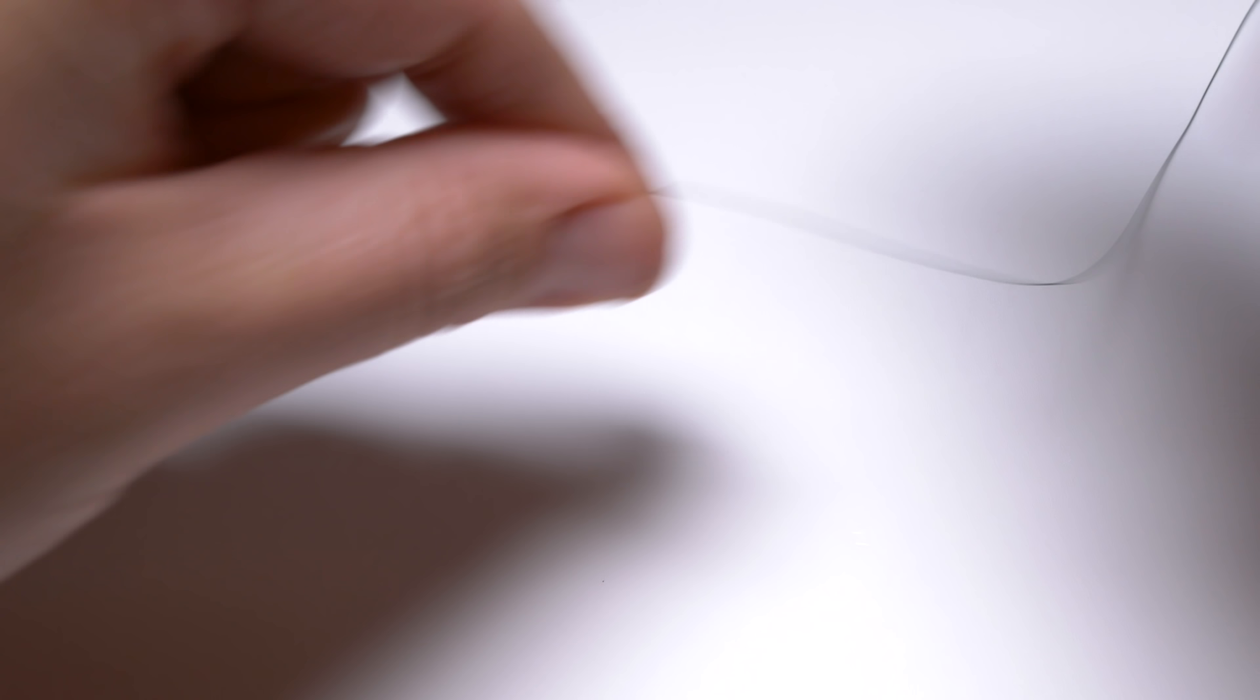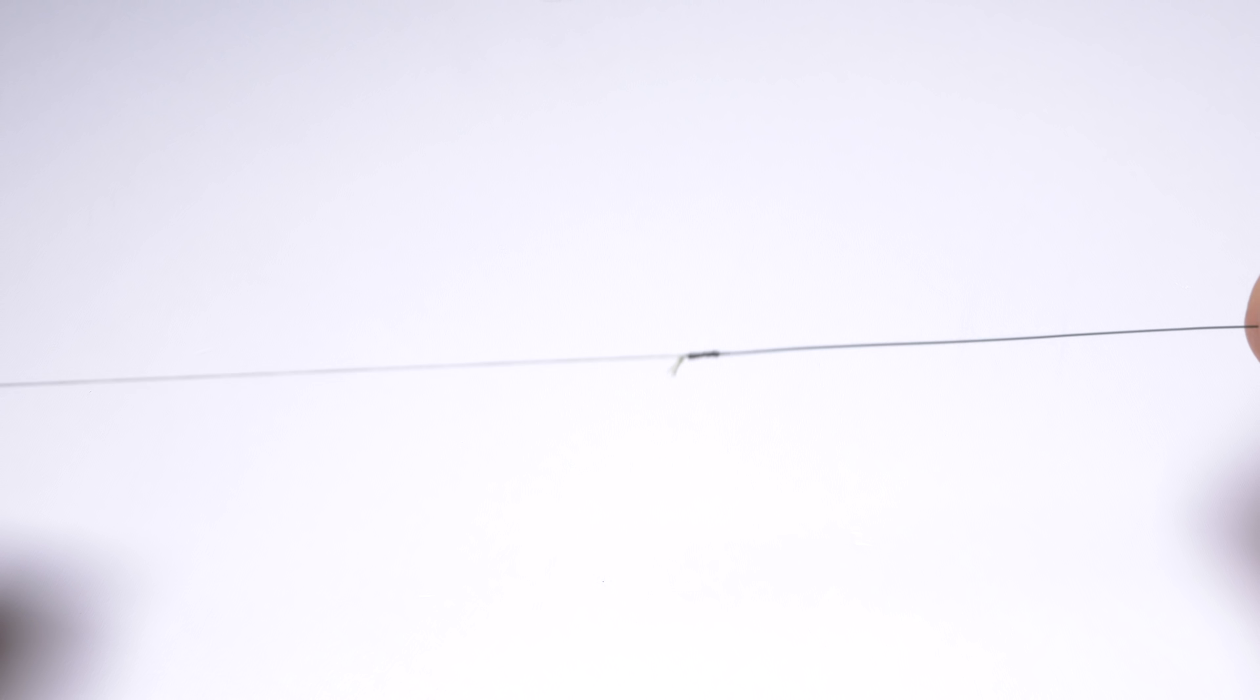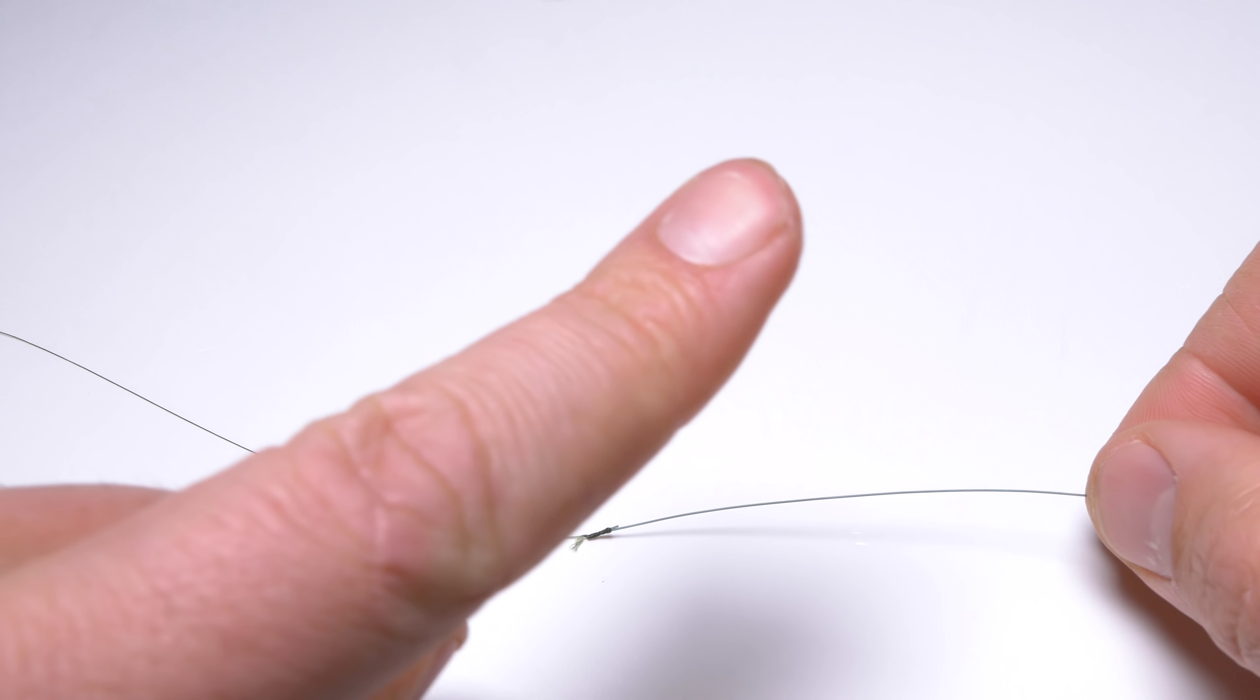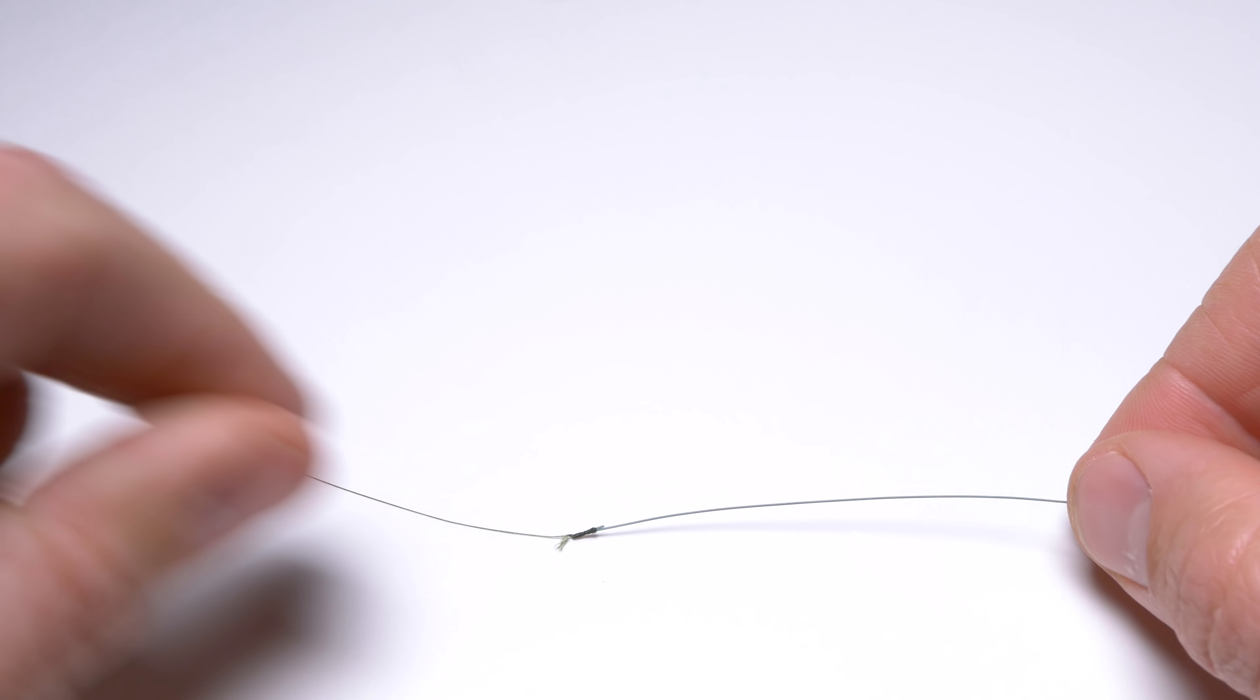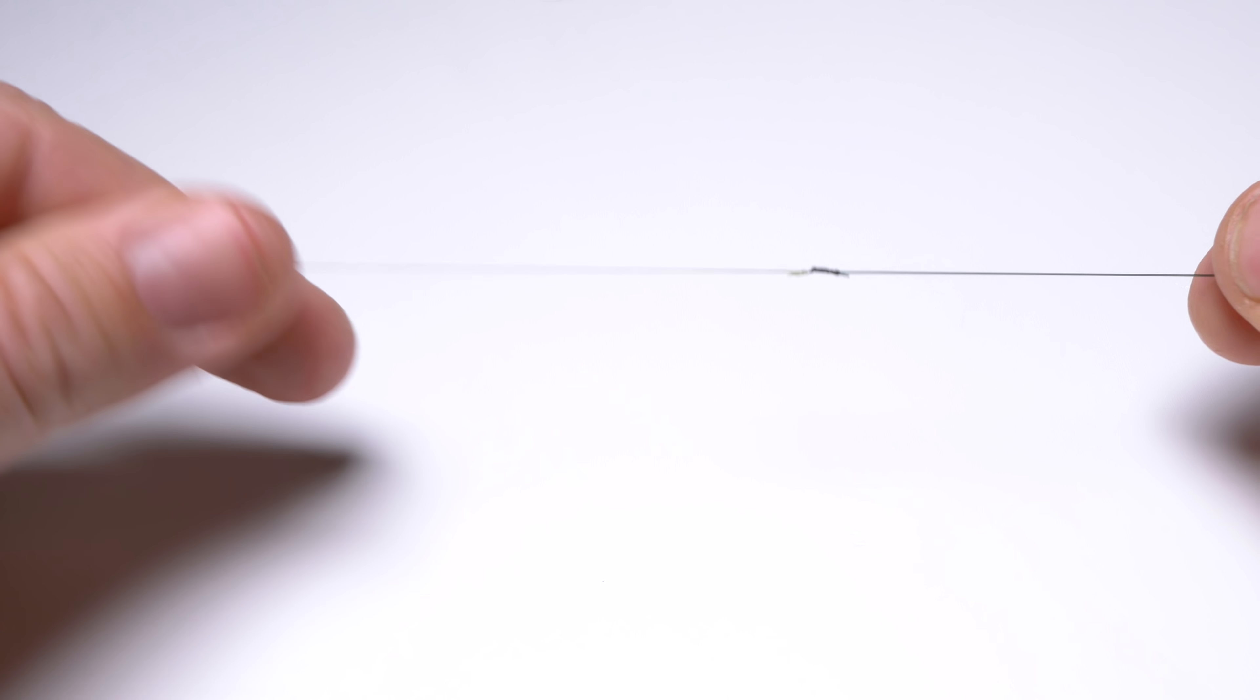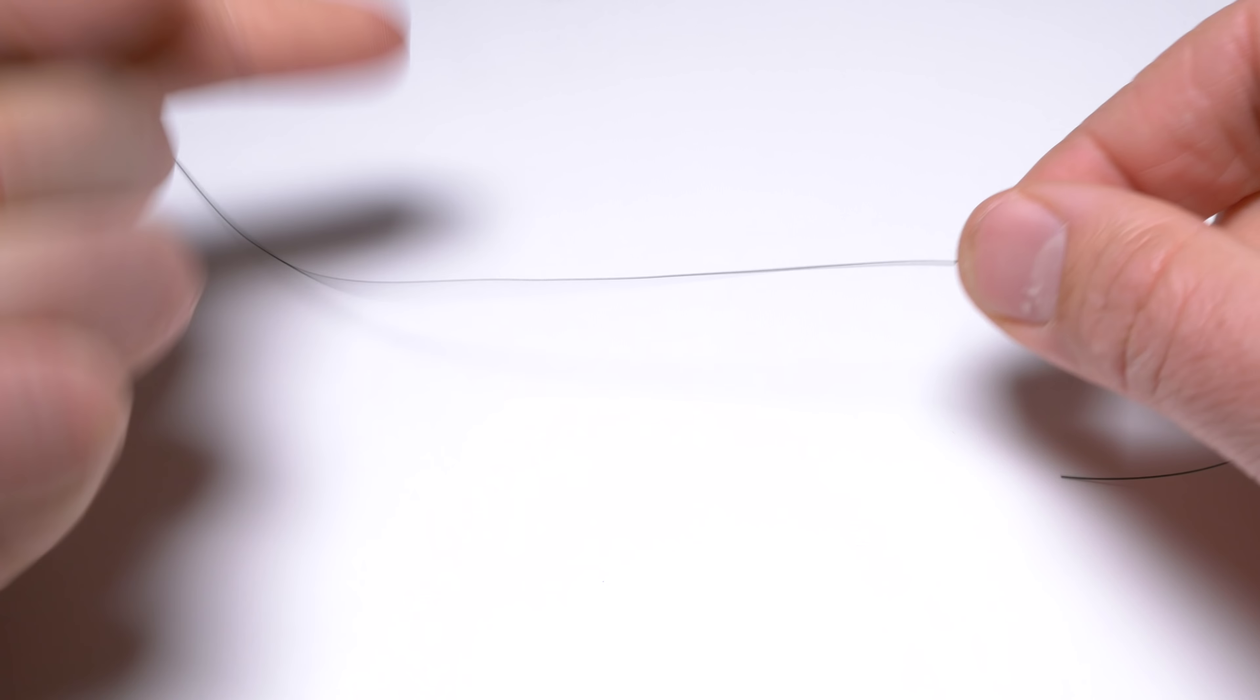Just to mention, I have already attached my hook link to my braided line using Albright's knot and I will put a little link in the corner to explain how to tie Albright's knot. And now, let's form this drop shot rig.